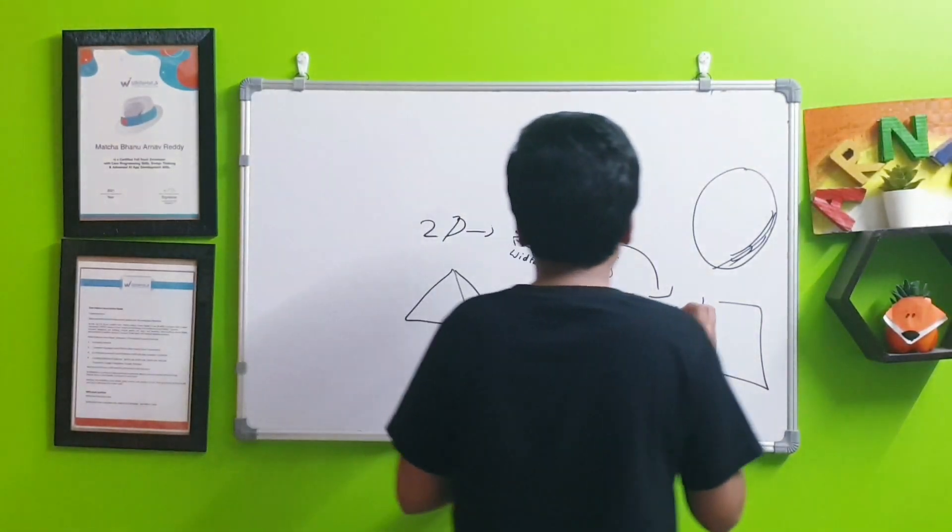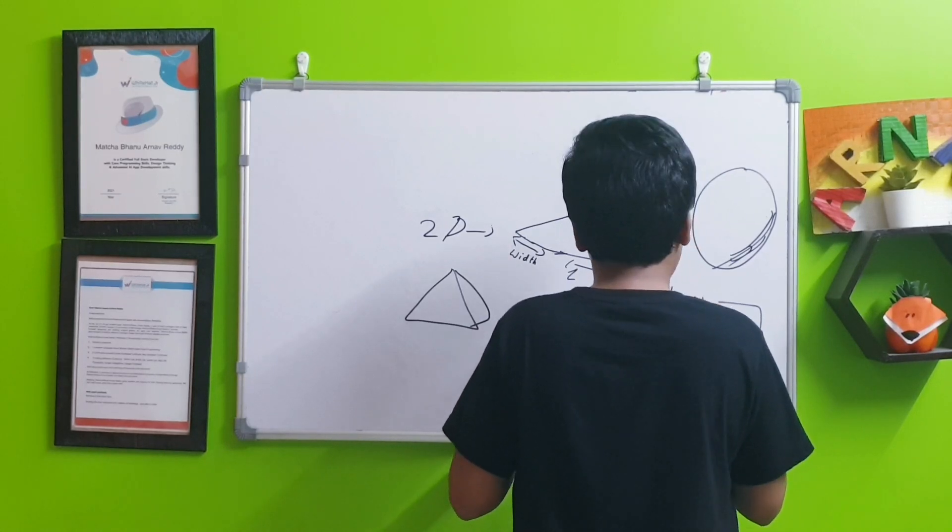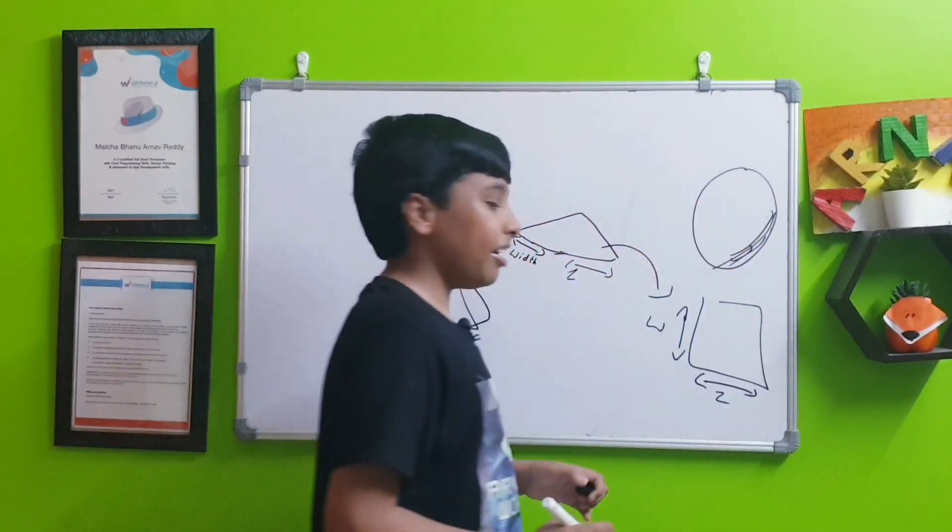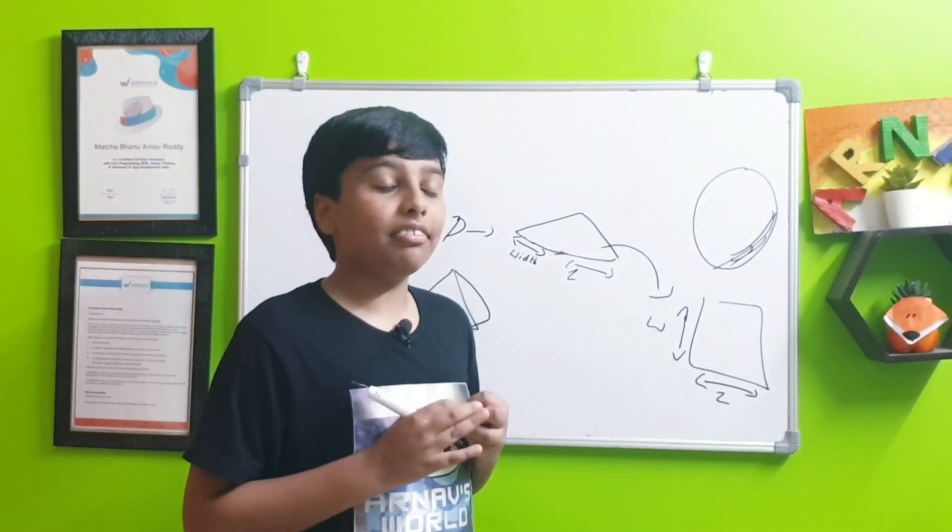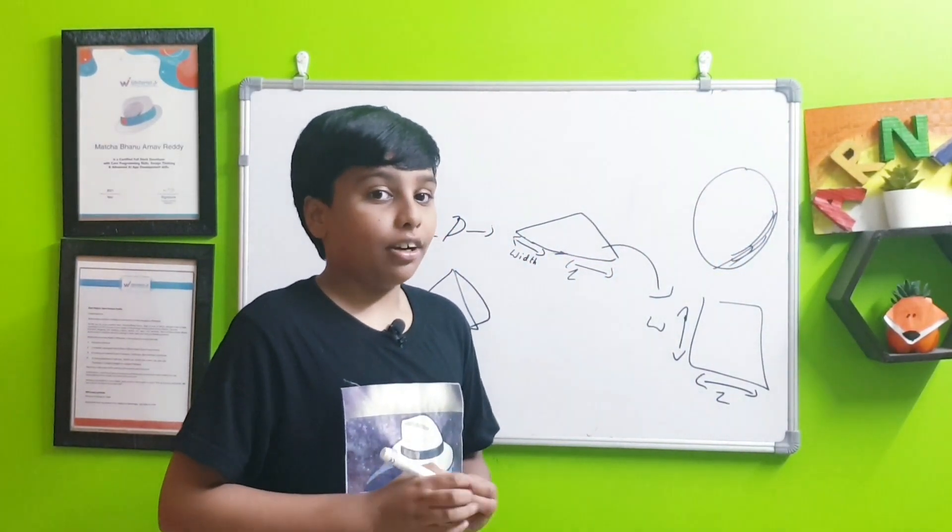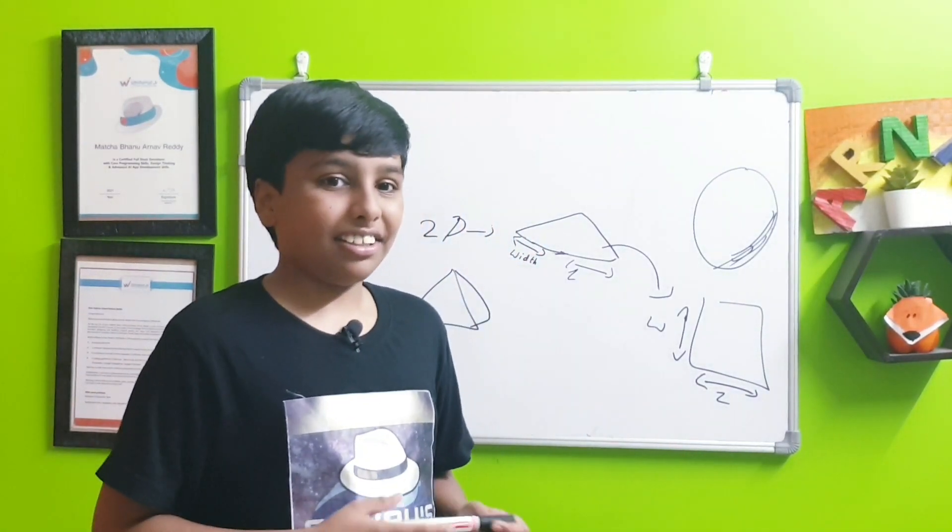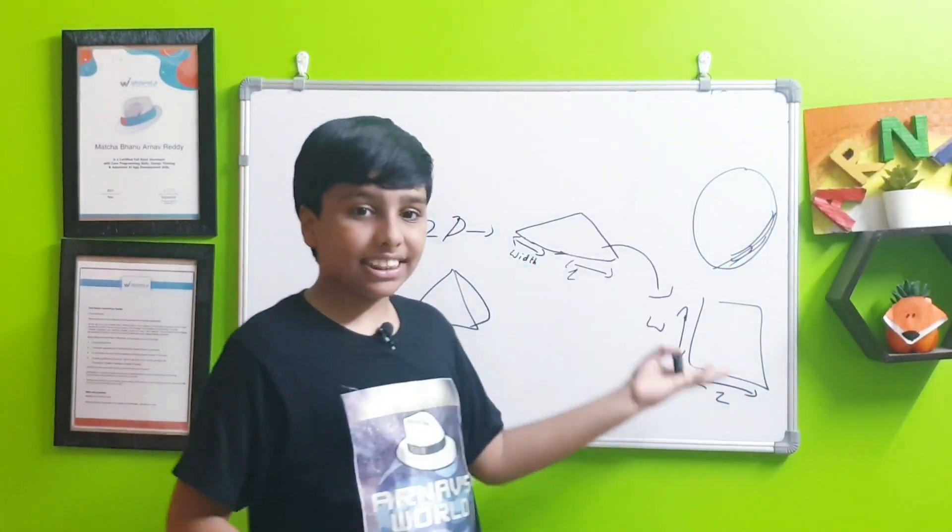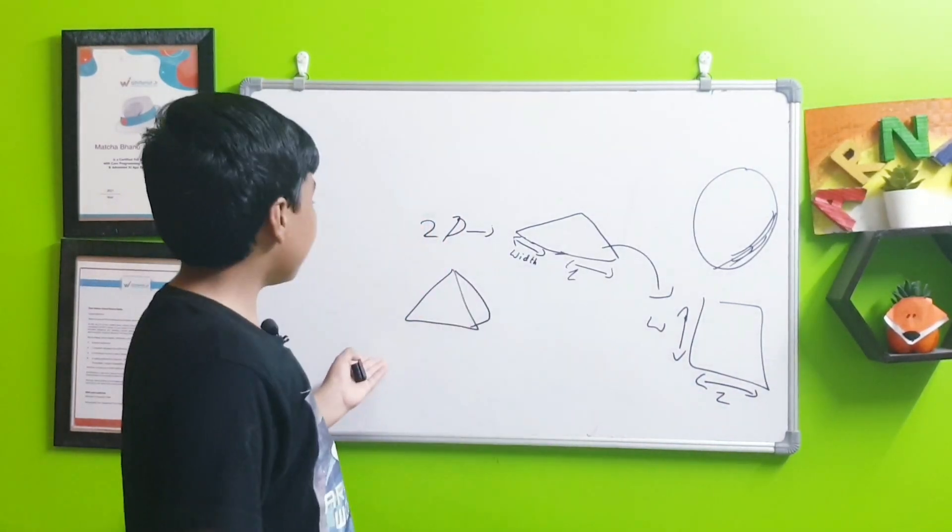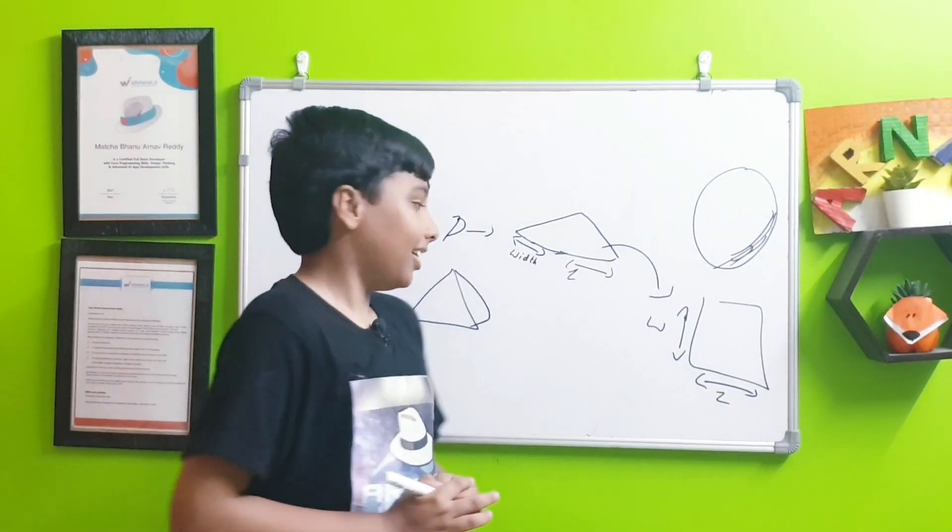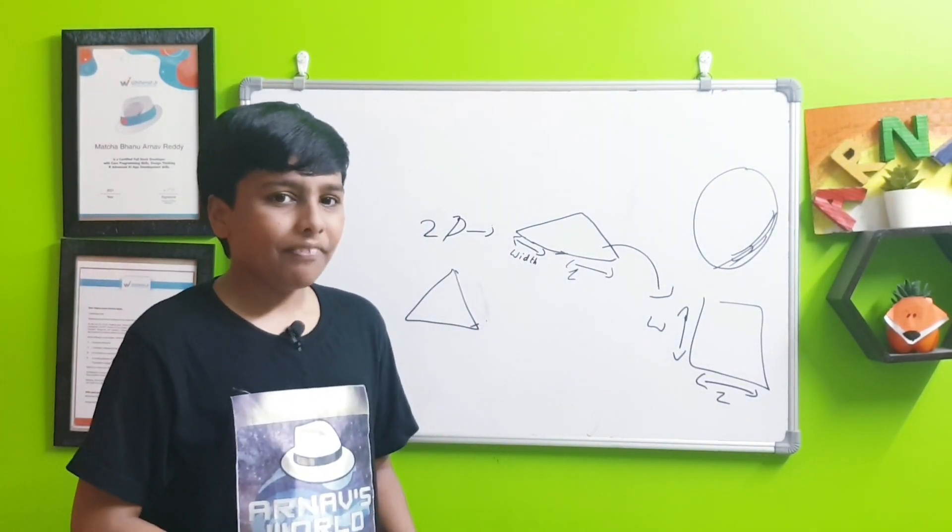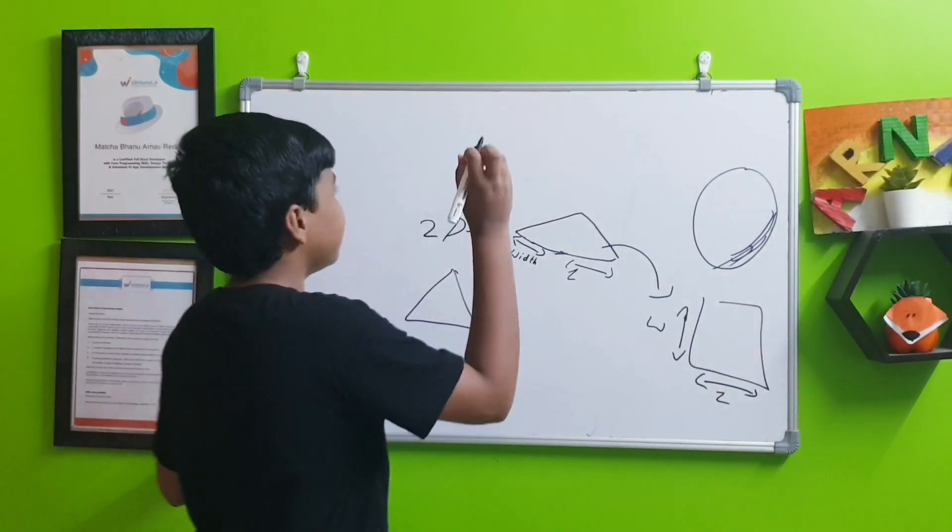It has only two measurements: the width and the length. There is no height. If it has height then it will suddenly become a 3D object. Things which are drawn on paper are like 2D objects. Here a sphere is turned into a circle and this pyramid is turned into a triangle. Just remove the sides, simple.